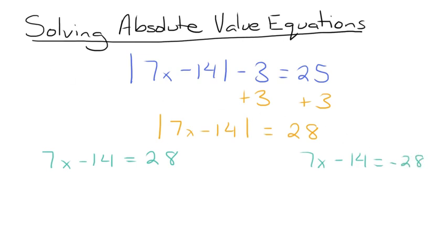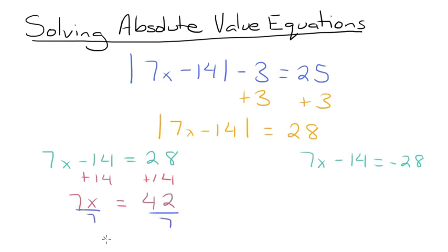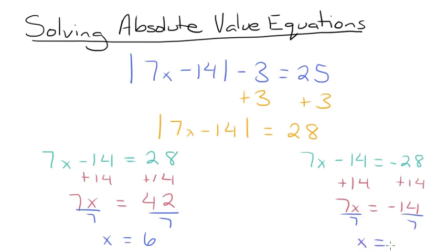Now we solve both equations. Starting with the first, we add 14 to both sides to get 7x is equal to 42, then divide both sides by 7 to get x equals 6. Moving on to the other equation, we add 14 to both sides to get 7x is equal to negative 14, then divide both sides by 7 to get x is equal to negative 2. So our answers for this equation are x equals 6 and x equals negative 2.